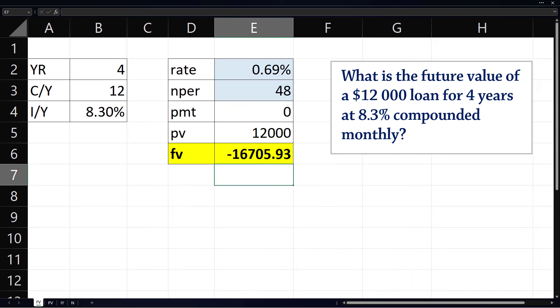Enter. You can see that the future value is negative. This is because the present value is positive. If we make the present value negative, you can see that the future value turns positive.